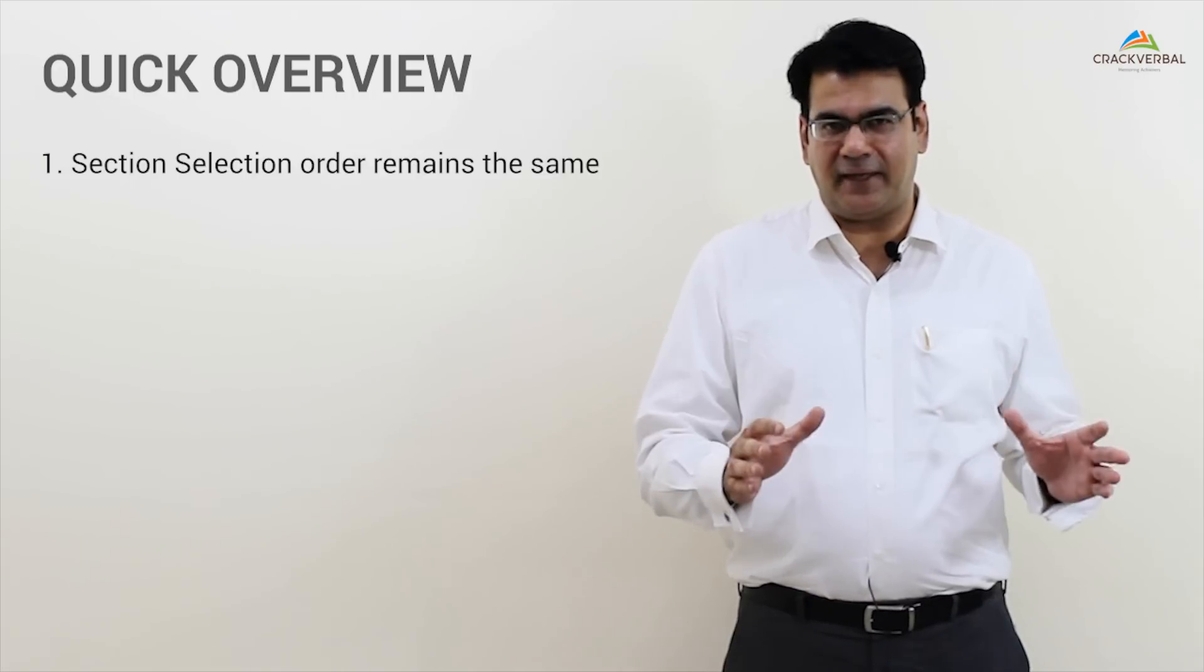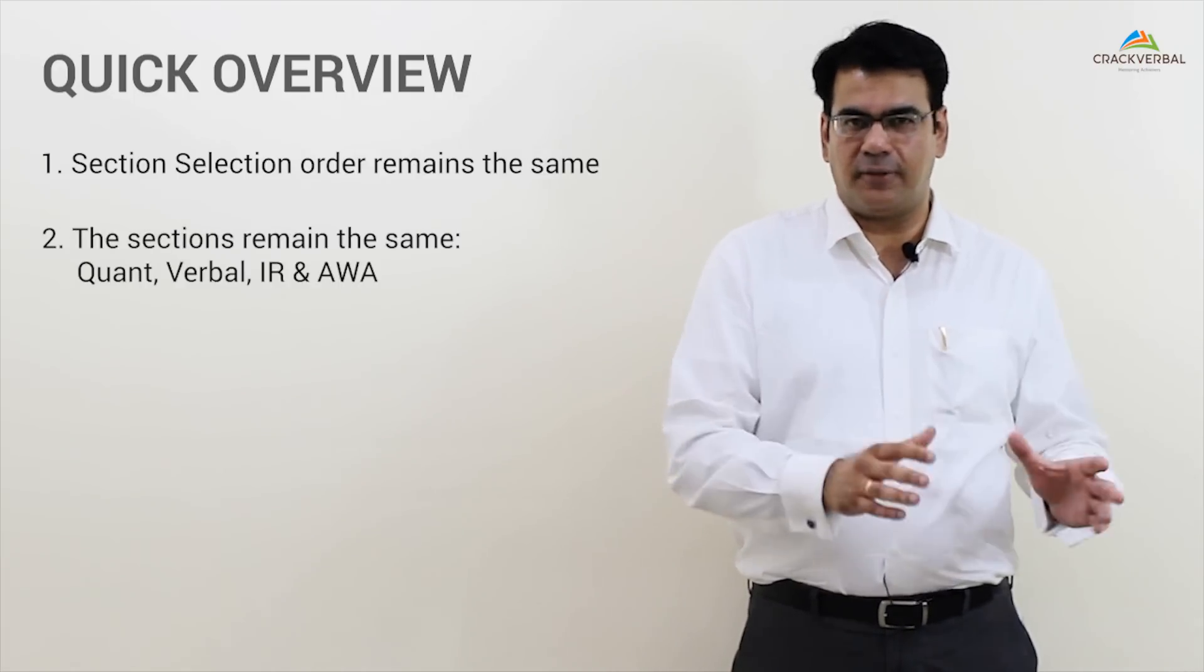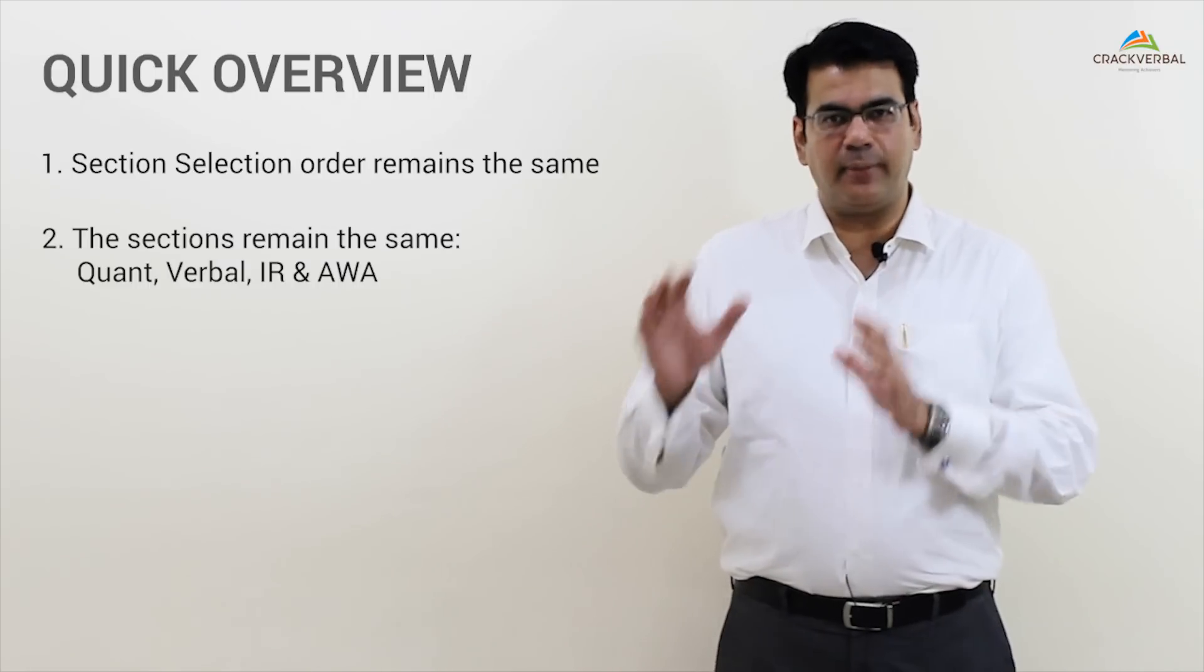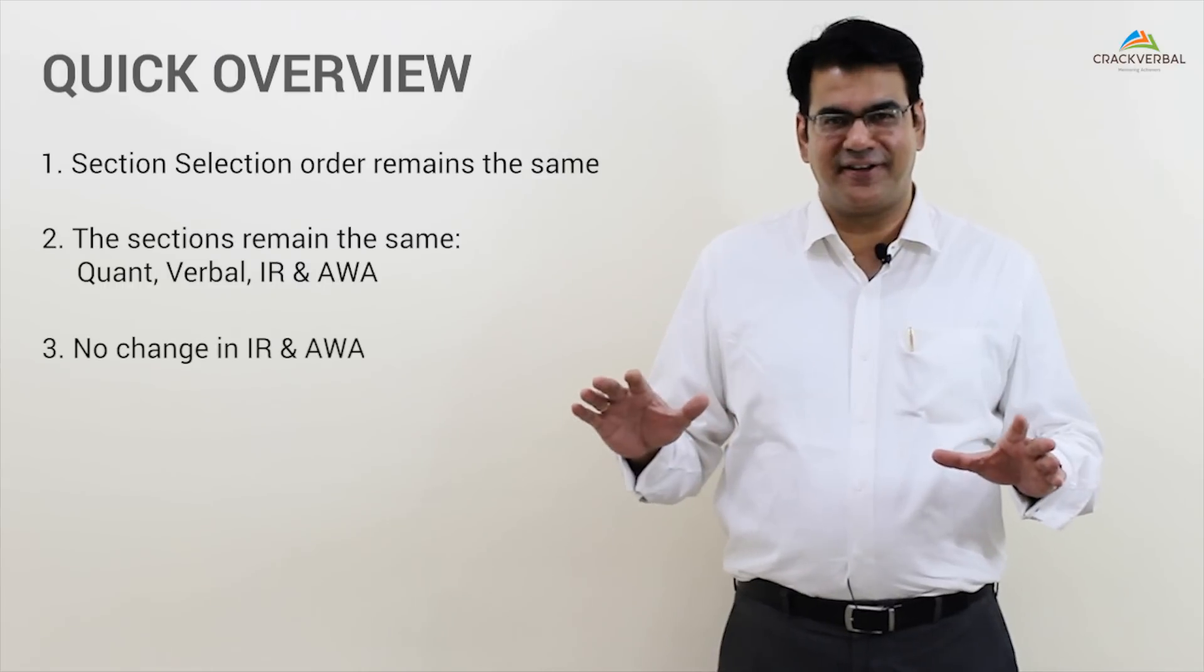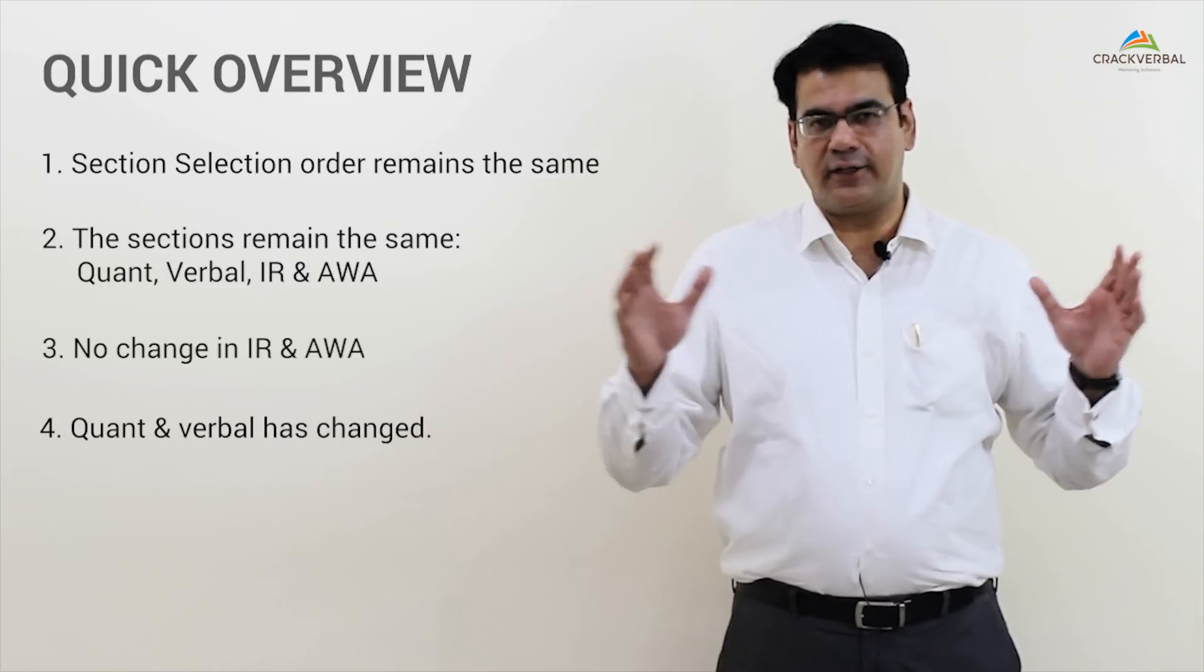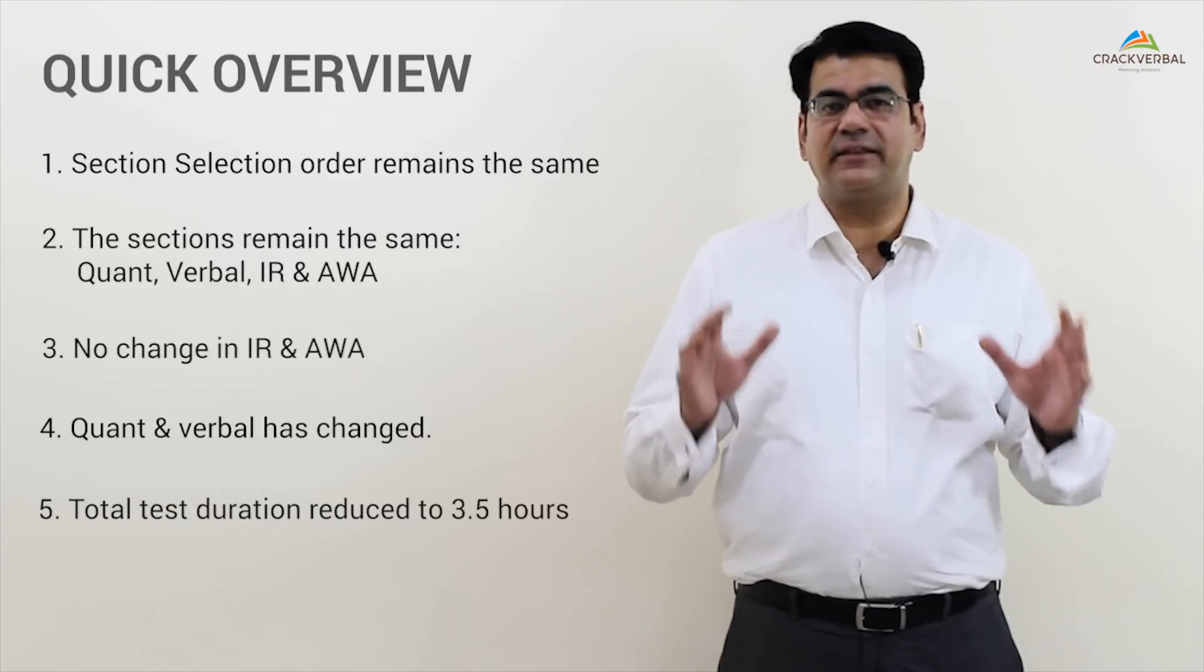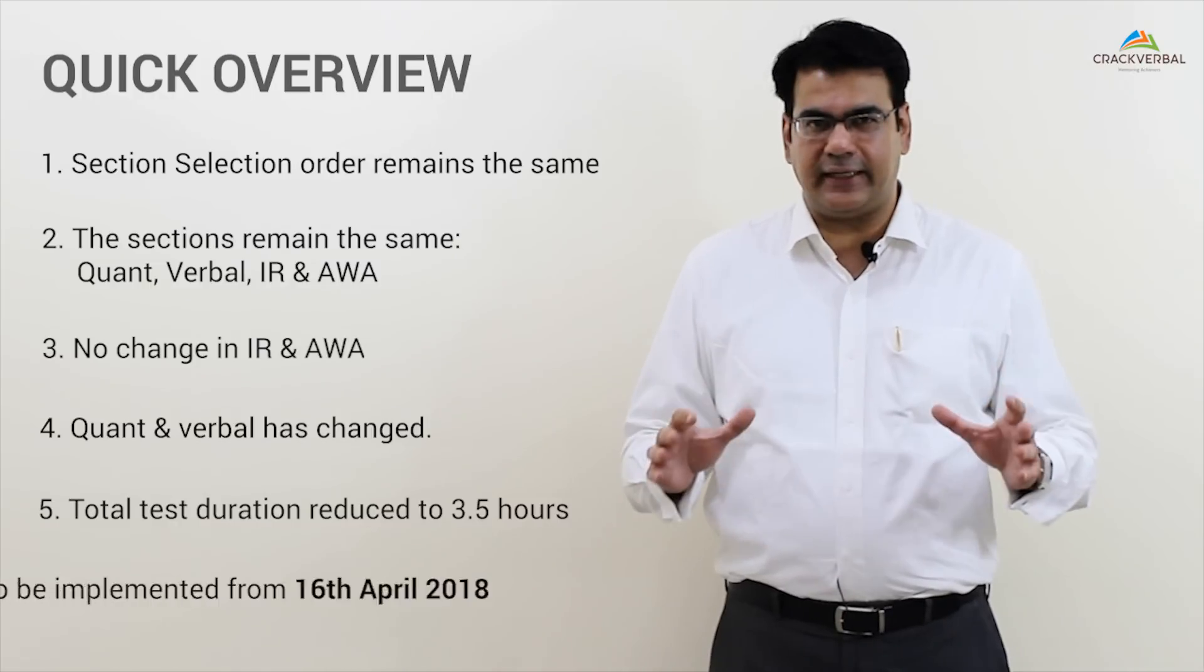First thing is, not everything has changed. Let me put it simply: the section selection order remains. You'll still get one section in Quant, one section in Verbal, one IR and one AWA. IR and AWA have not changed. Quant and Verbal have changed, and the total test is now three and a half hours. So let's get into the details.